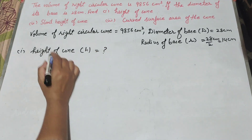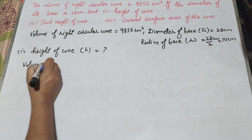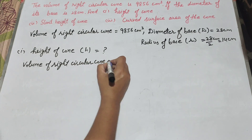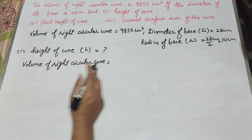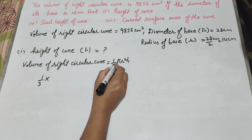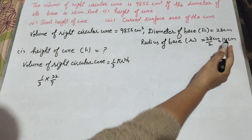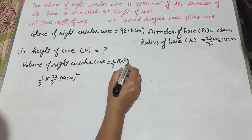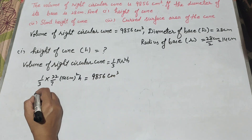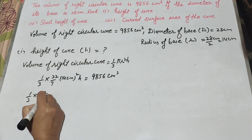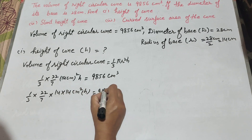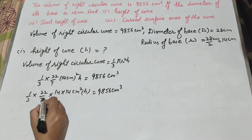In the first part, we find the height of the cone, h. Given the volume of the right circular cone, we know the formula: volume equals 1 over 3 pi r squared h. It is equal to 1 over 3, pi is 22 over 7, r is radius 14 centimeter squared, h is the height we find, equal to volume 9856 centimeter cube. So 1 over 3 into 22 over 7 multiply 14 multiply by 14 centimeter squared into h equals 9856 centimeter cube.